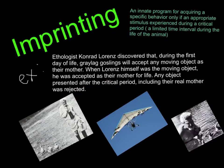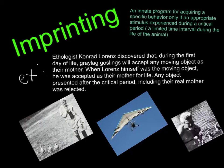Imprinting is an innate program for acquiring a specific behavior only if an appropriate stimulus is experienced during a critical period. A critical period is a limited time interval during the life of the animal. Ethologist Lorenz discovered that during the first day of life, gray-legged goslings will accept any moving object as their mother. When Lorenz himself was the moving object, he was accepted as their mother for life. Any object presented after the critical period, including their real mother, was rejected. As you can see, he's Lorenz with the little goslings — he even flew with them and had to bathe with them.